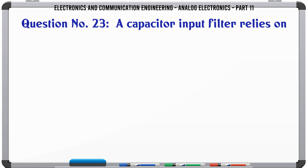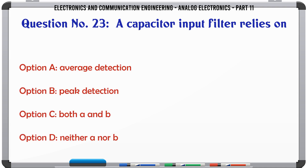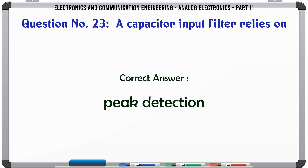A capacitor input filter relies on. A. Average detection. B. Peak detection. C. Both A and B. D. Neither A nor B. The correct answer is: Peak detection.